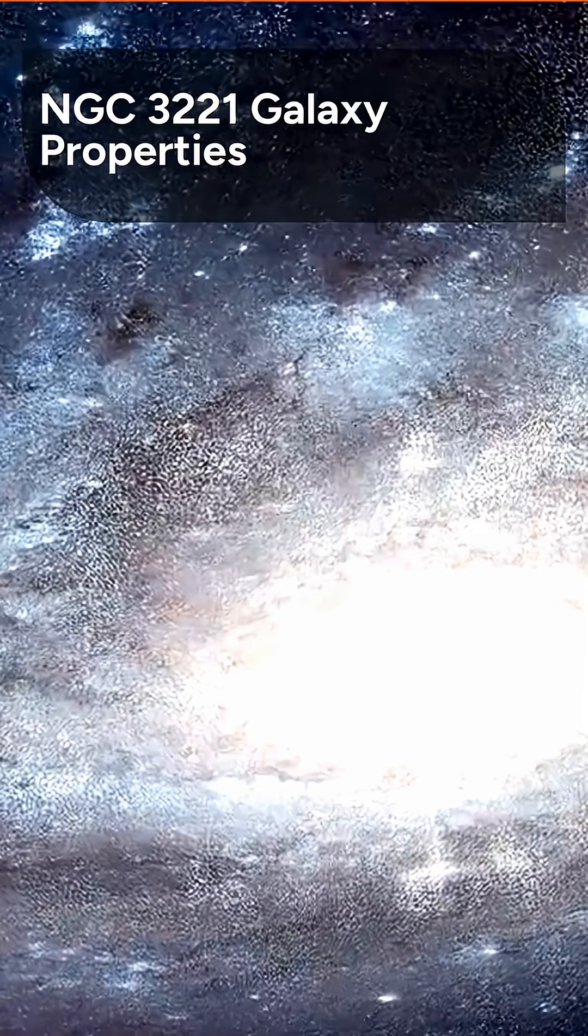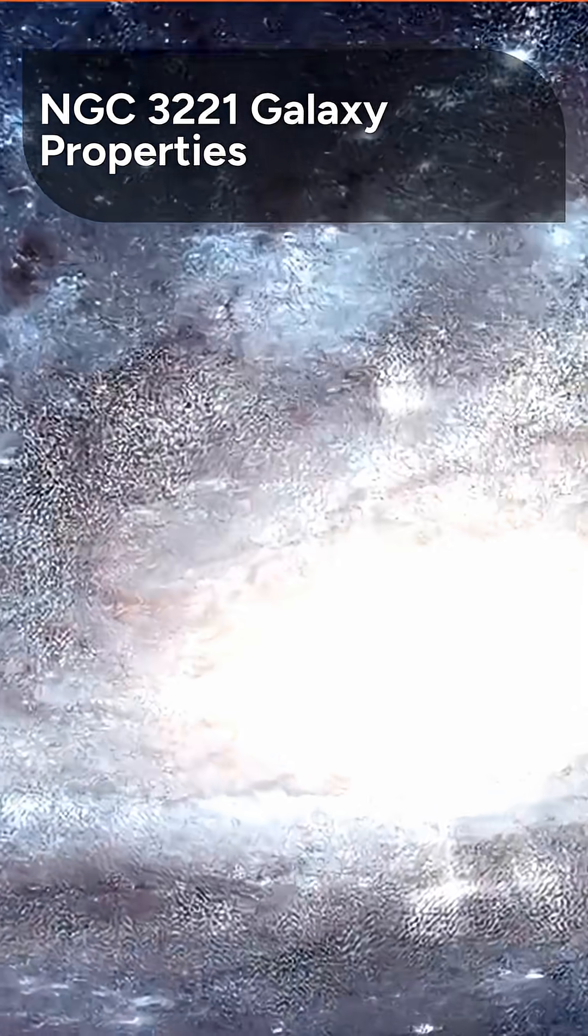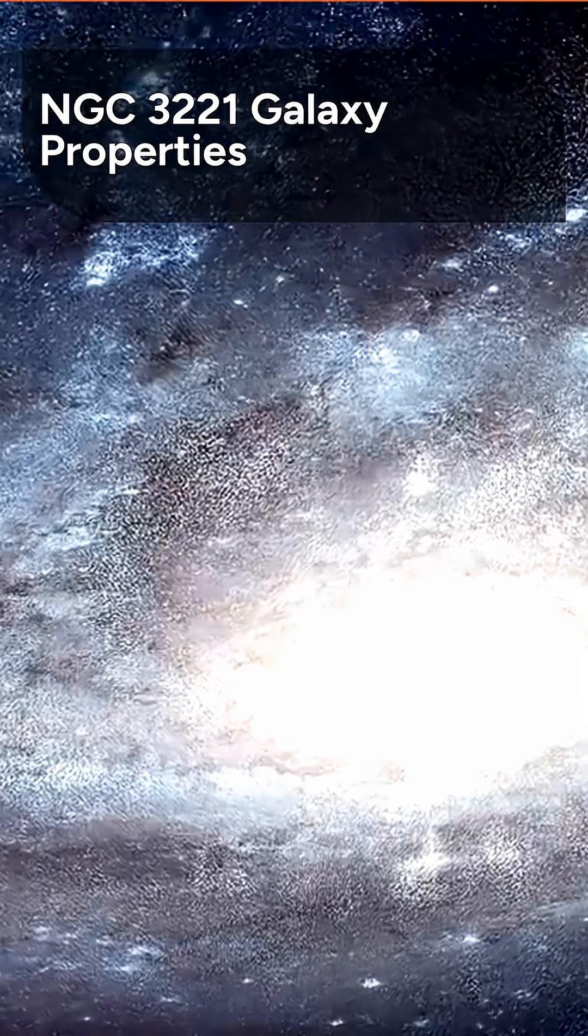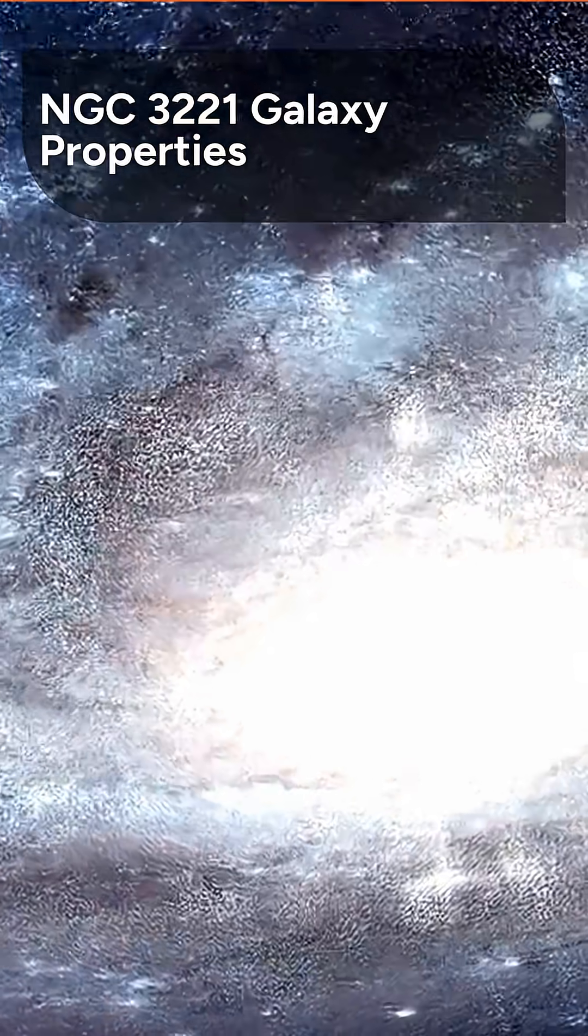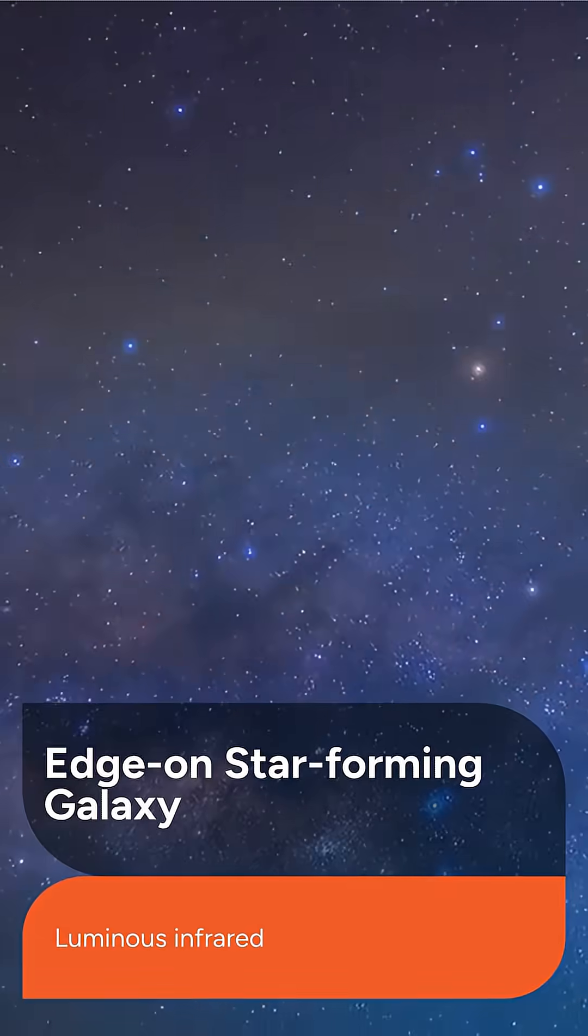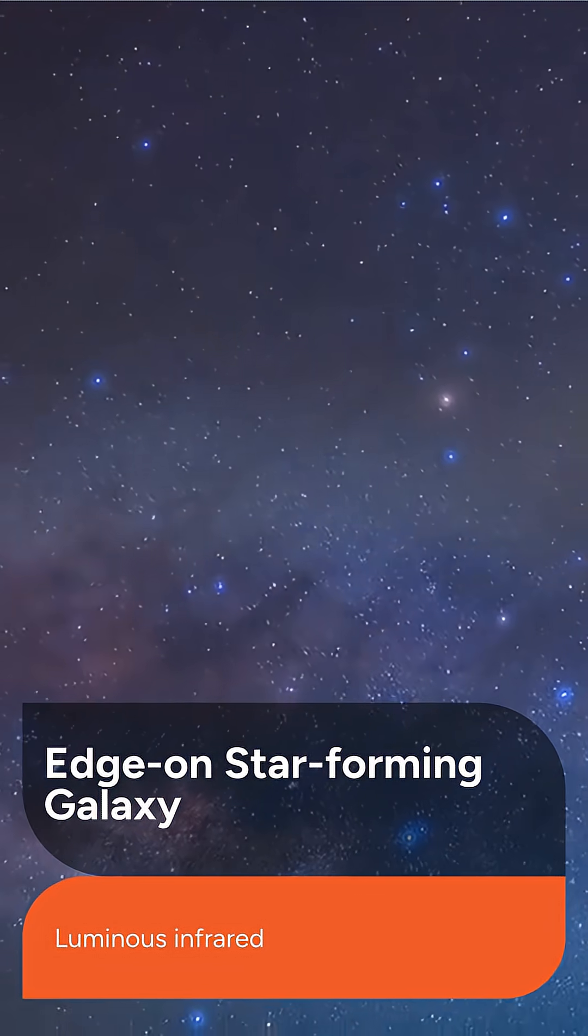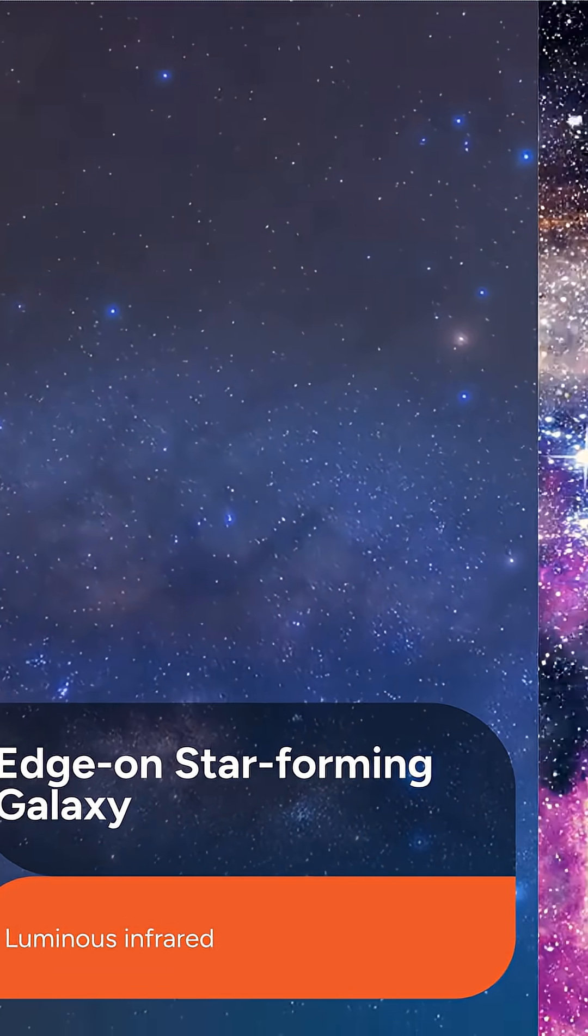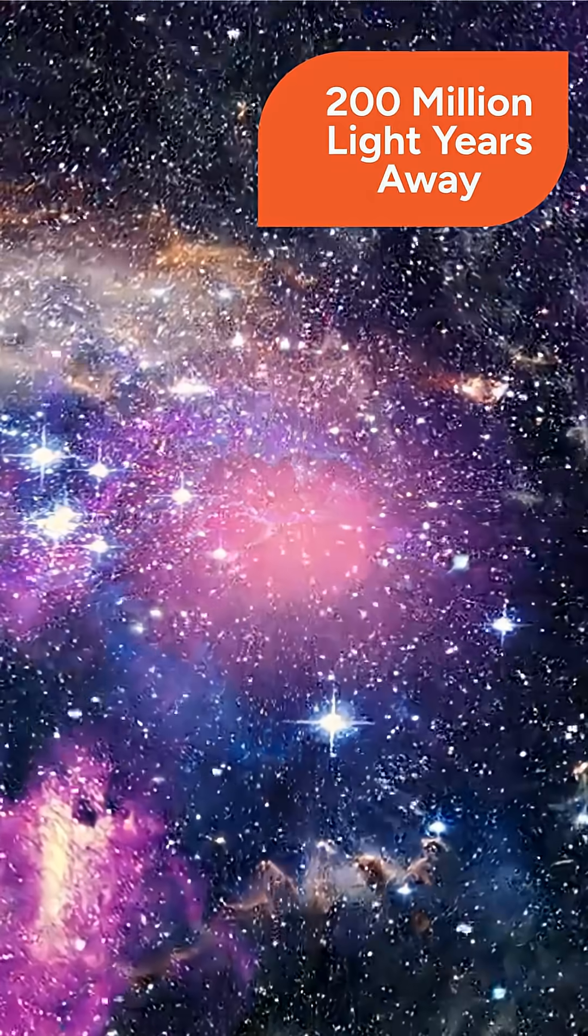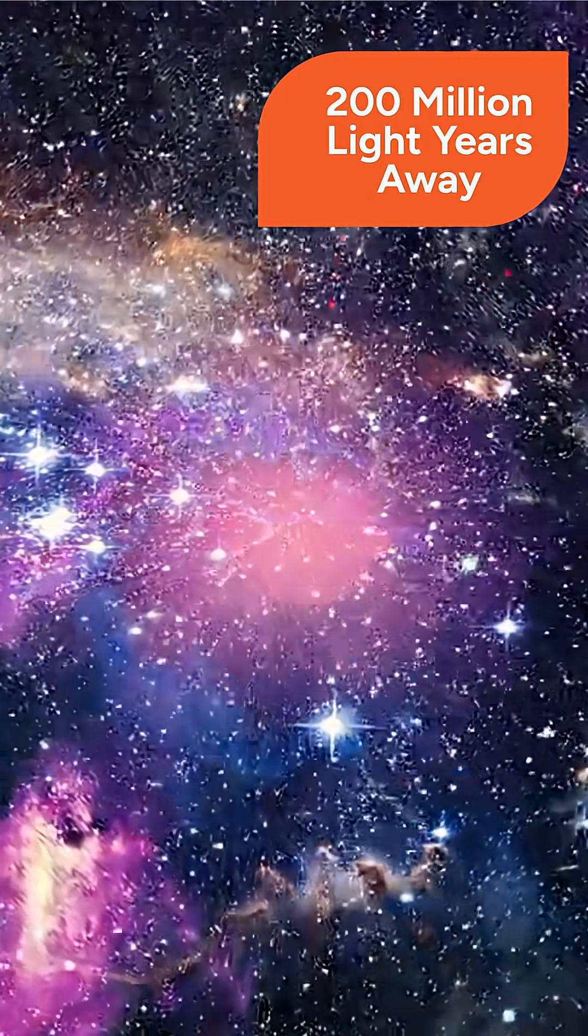Before diving into the AGN confirmation, let's understand the key properties of the galaxy NGC 3221. NGC 3221 is classified as an edge-on, star-forming luminous infrared galaxy. This distant system is located approximately 200 million light-years away from Earth.